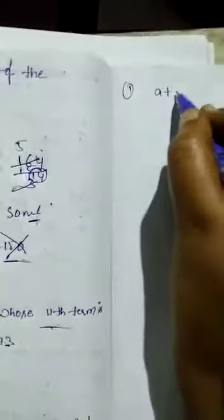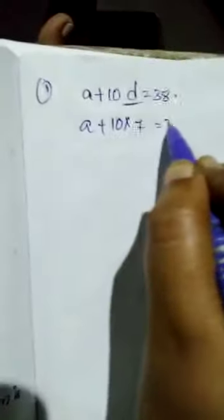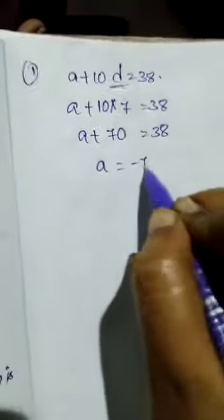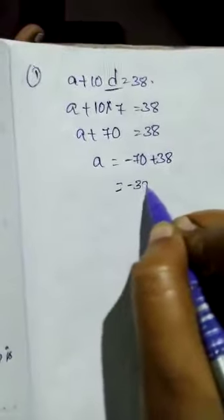First equation: A plus 10D equal to 38. We know the D value, put it here. Substitute the D value, 10 into D is 7. A plus 10D equal to 70, equals 38. A is equal to minus 70 plus 38, which is equal to minus 32. We know A value and D value.